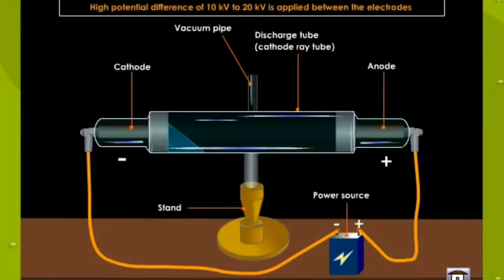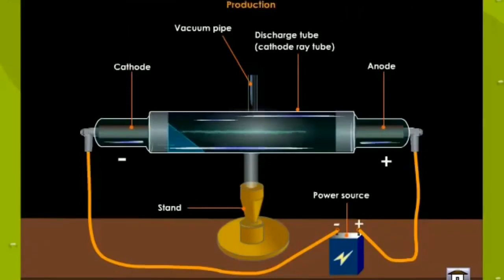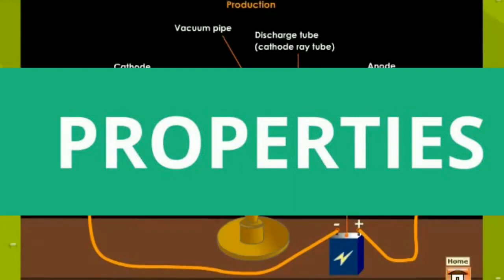The two conditions required for this experiment are: number one, low pressure of the gas inside the glass tube; number two, high voltage. When these two conditions were fulfilled, it was observed that the glass tube began to glow. You can see the diagram, the glow is there. And this beam is called cathode ray.